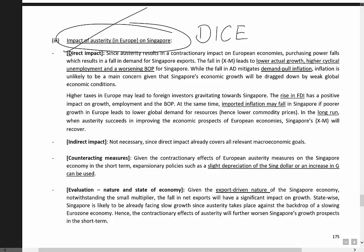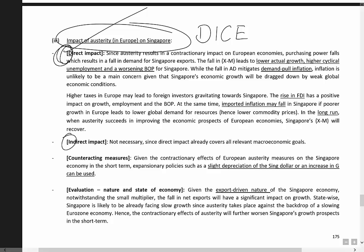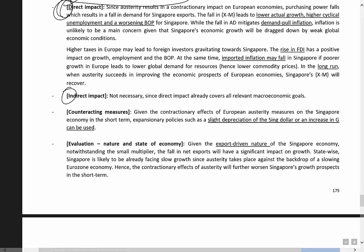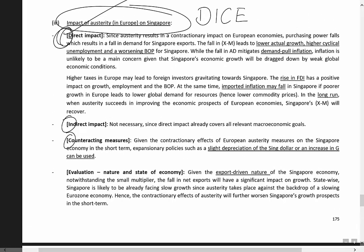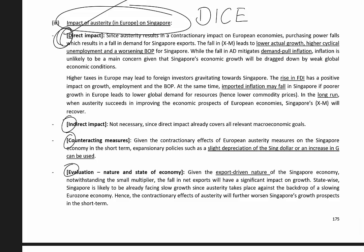D stands for direct impact — we try to link this event to all four macroeconomic goals. If any goal is not covered, we move on to indirect impact to draw additional links. Following that, we look at counteracting measures: what can be done to offset or alleviate the impact? Finally, we end with an evaluation. In macroecons, evaluation usually ties back to the nature and state of the economy. So what's the direct impact of austerity in Europe — or even in Greece — on Singapore?